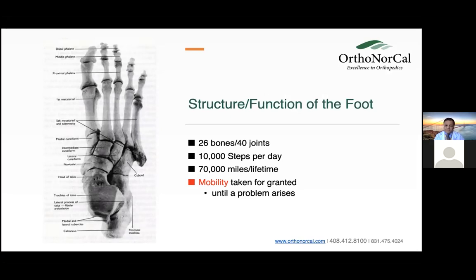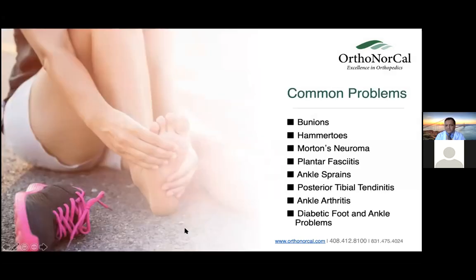The foot is pretty complicated — 26 bones and 40 joints. Most people take their mobility for granted until there's a problem. On average, people take about 5,000 to 10,000 steps per day. The foot has a lot more complexity compared to the hip or the knee. The common problems we'll talk about today are bunions, hammer toes, Morton's neuroma, heel pain, plantar fasciitis, ankle sprains, posterior tibial tendonitis, ankle arthritis, and diabetic foot and ankle problems.